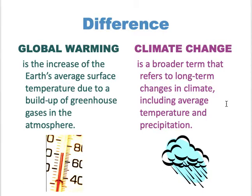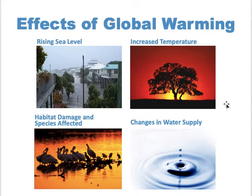Climate change is more encompassing because it includes average temperature and precipitation. We know that temperature within the atmosphere is one of the contributing factors in the formation of climate, particularly in the distribution and formation of precipitation. So the difference is that climate change includes both temperature and precipitation, while global warming focuses only on temperature.